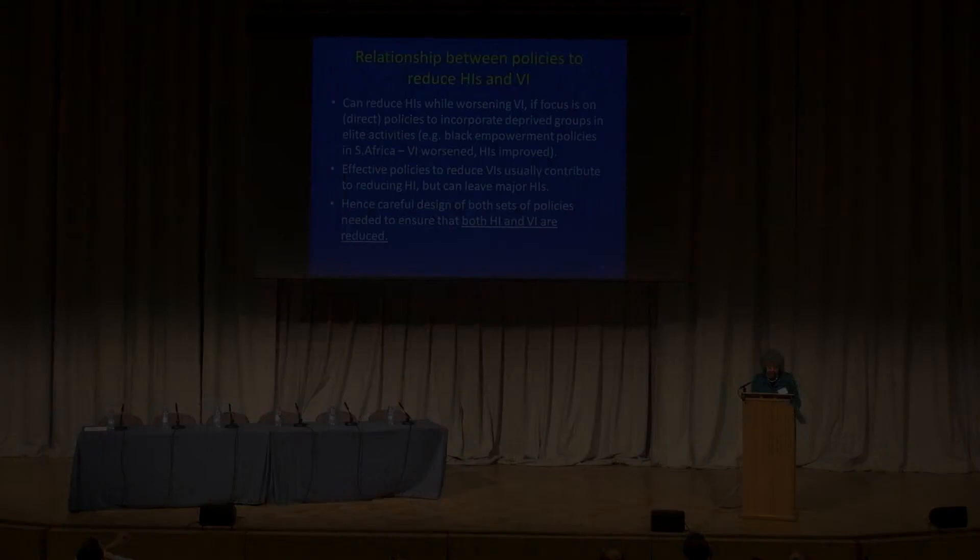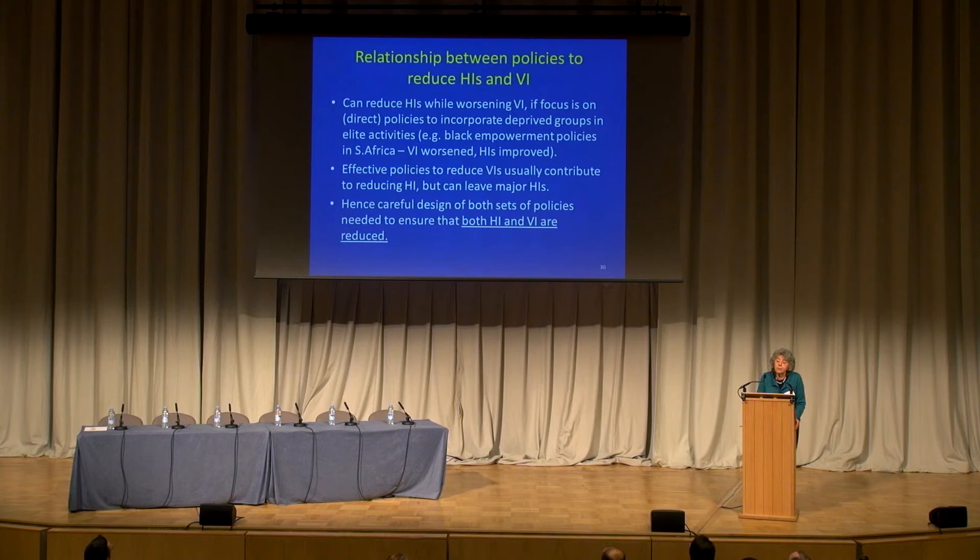It's worth talking about the relationship between policies which improve vertical and horizontal inequality. You can reduce horizontal inequalities while at the same time worsening vertical inequalities, and clearly you don't want to do that — that comes down to policy design. Usually, effective policies to reduce vertical inequalities will also reduce horizontal inequalities, which is an advantage, though it's rather slow. Essentially, you need to look carefully at both sets of policies in order to achieve a reduction of both horizontal and vertical inequalities.